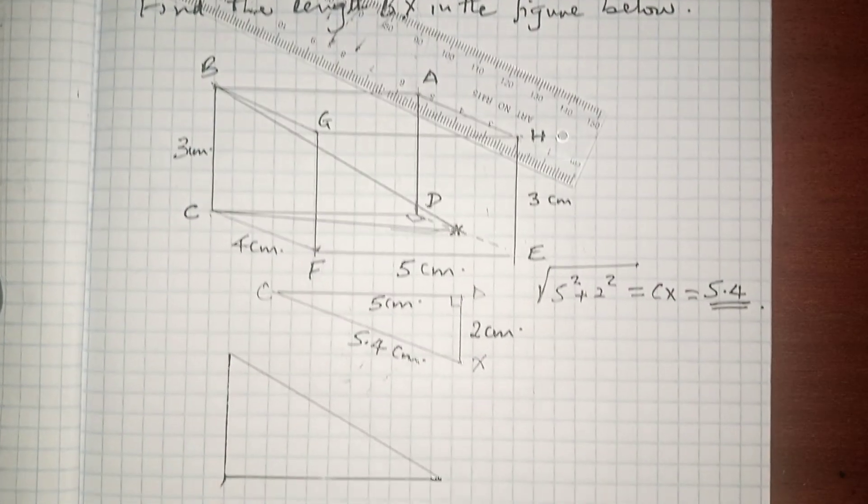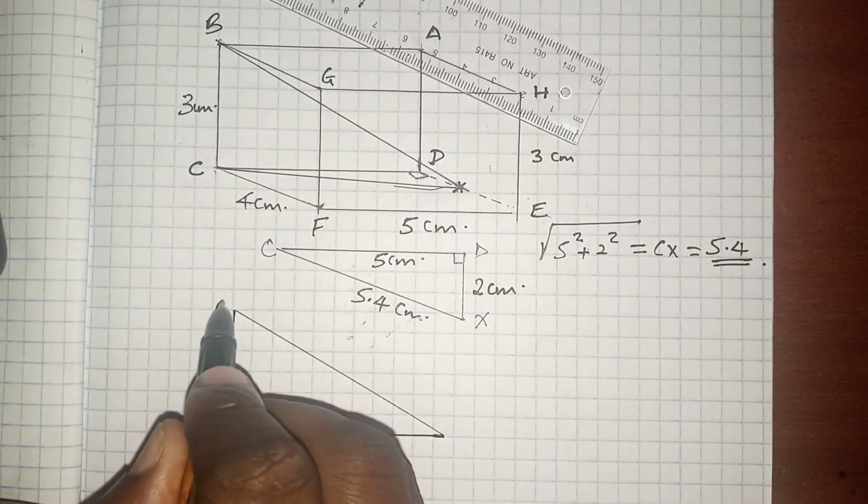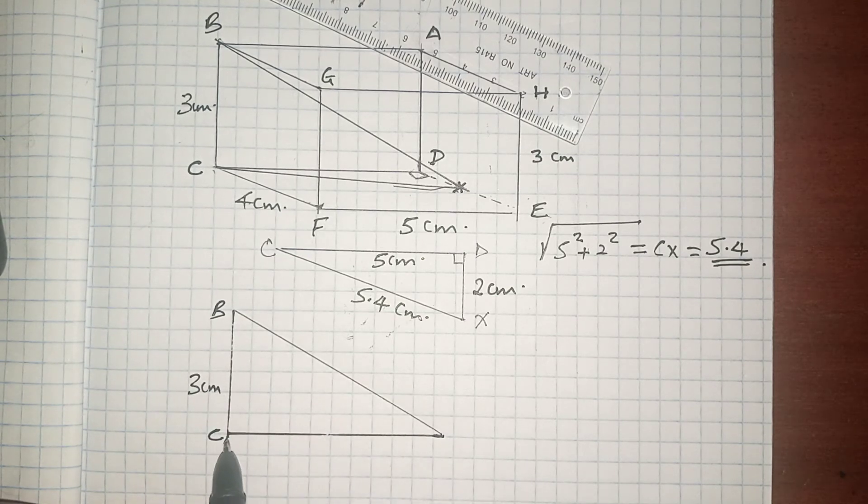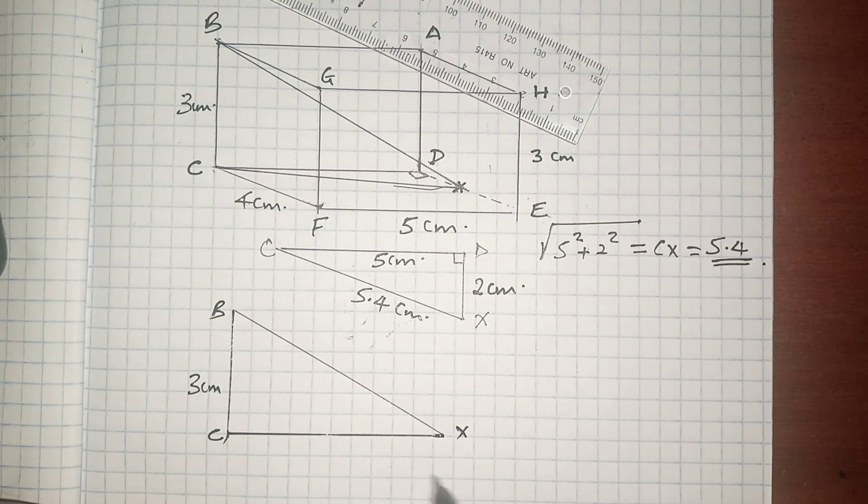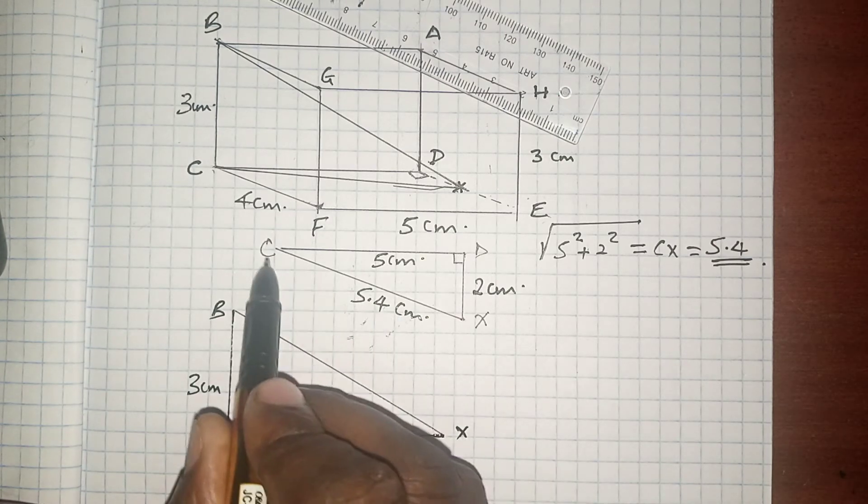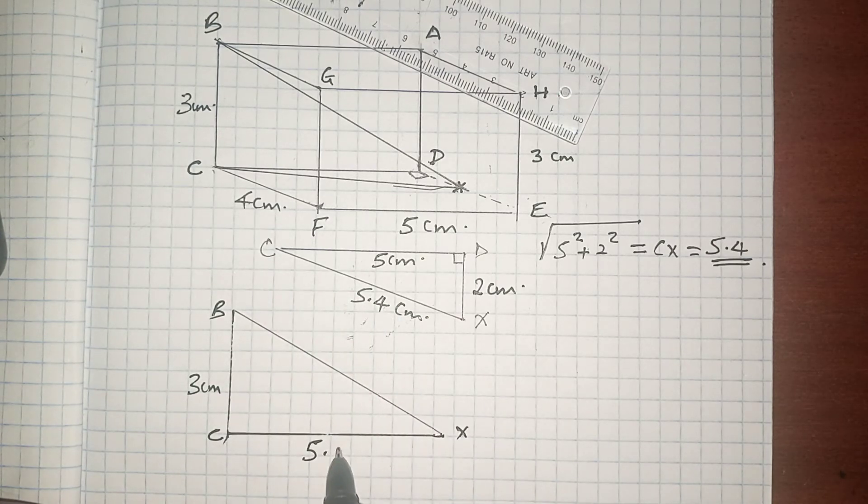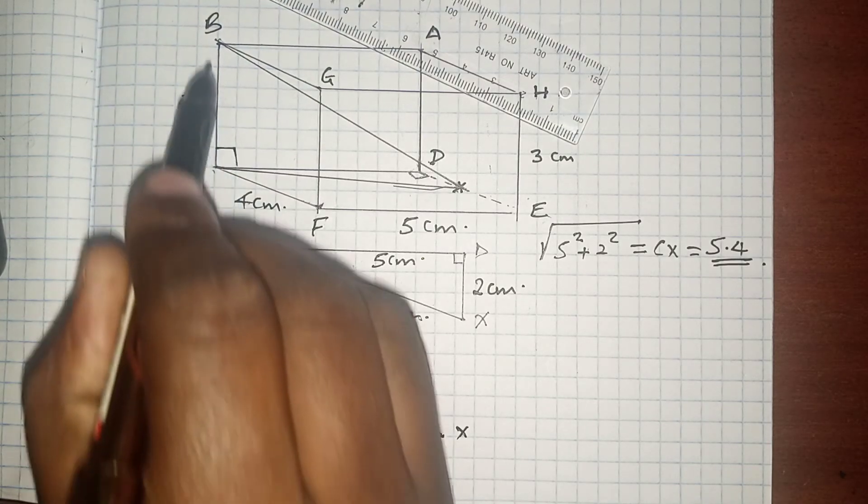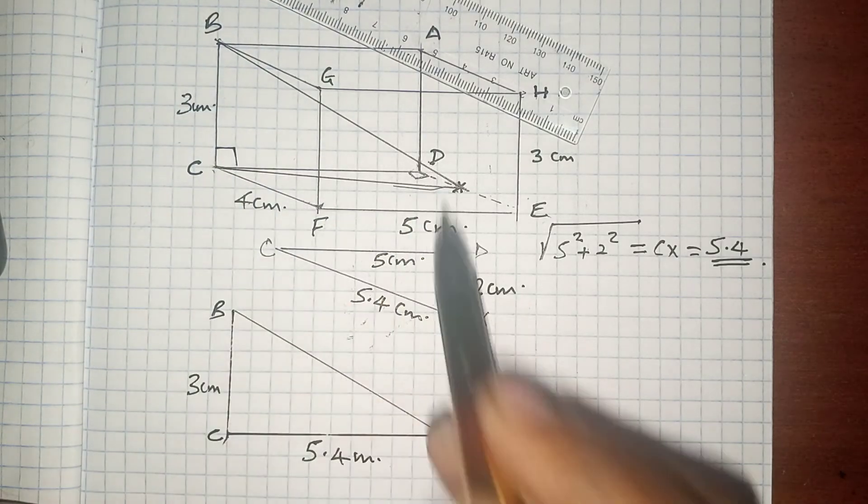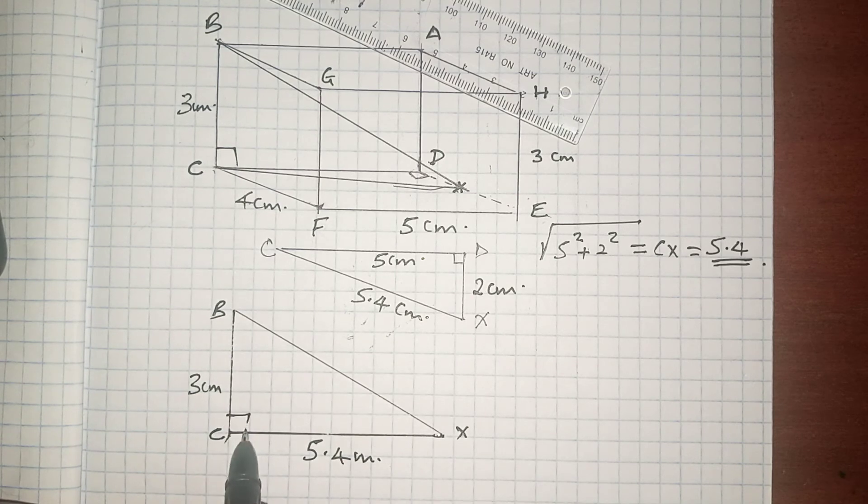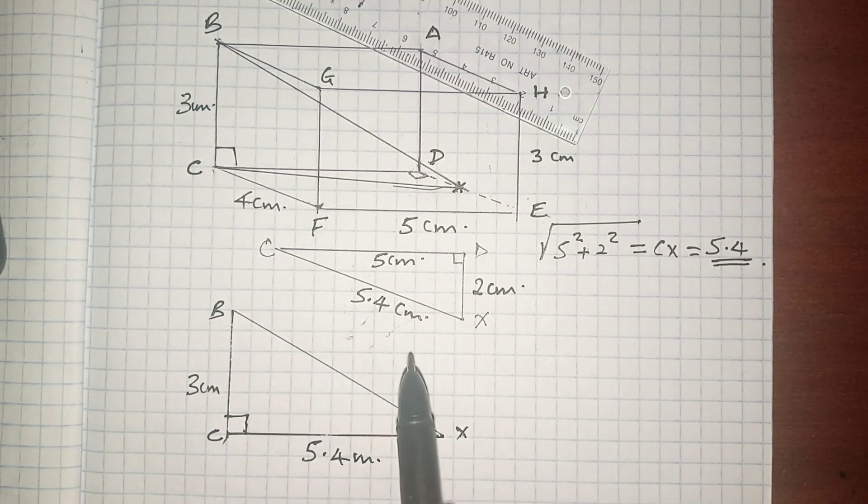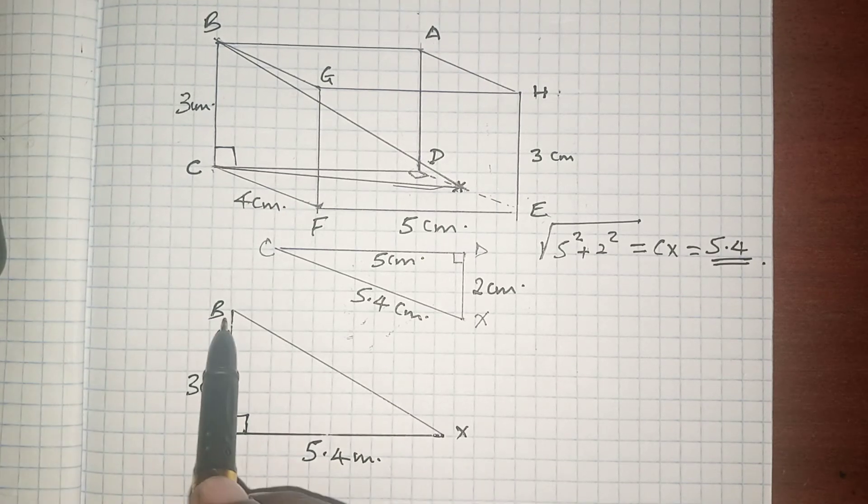This is B, this is C which is 3 cm, this is X which is now 5.4. CX is 5.4 cm. Of course, this angle BCX is 90 degrees. So our interest is how we are going to calculate the length BX.